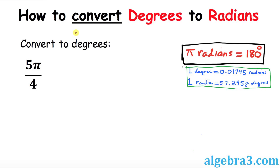Hello again everyone. In this video tutorial I will show you how to convert from degrees to radians and vice versa. Let's look at this example: we have been given 5π over 4 radians and we want to convert to degrees.